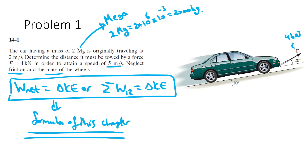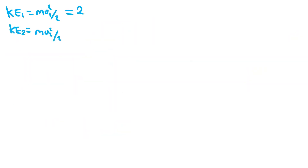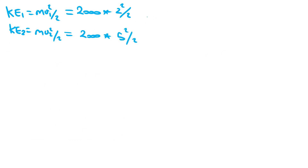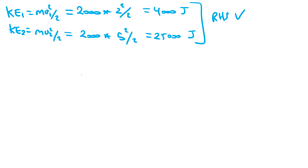The kinetic energy at point 1: the car was originally moving at 3 meters per second, and the mass is 2,000 kg, so KE1 = (1/2) × 2,000 × 3² = 9,000 J. Wait — the problem says originally 2 m/s, giving KE1 = (1/2) × 2,000 × 2² = 4,000 joules. Then KE2 = (1/2) × 2,000 × 5² = 25,000 joules. The right-hand side is done; now comes the left-hand side, which is the work.